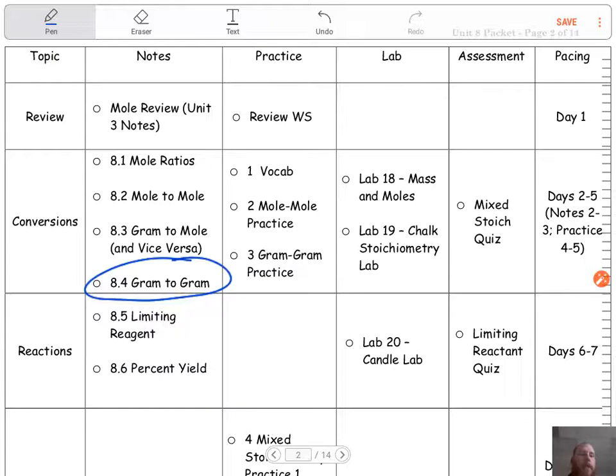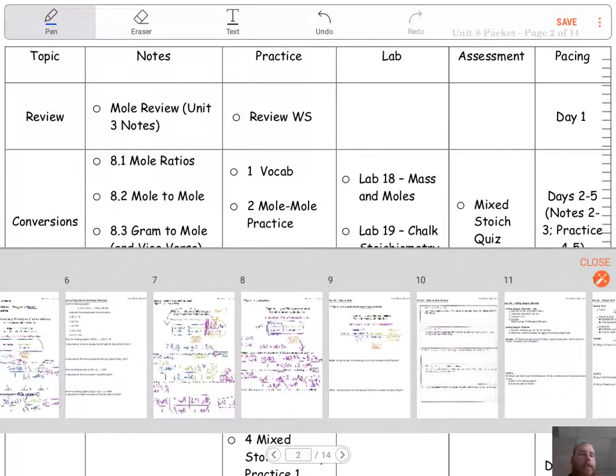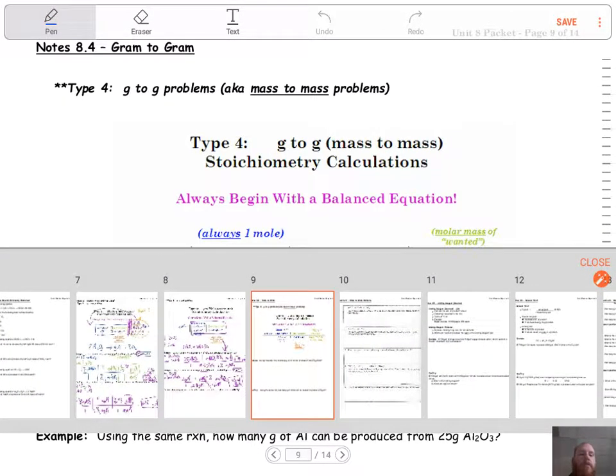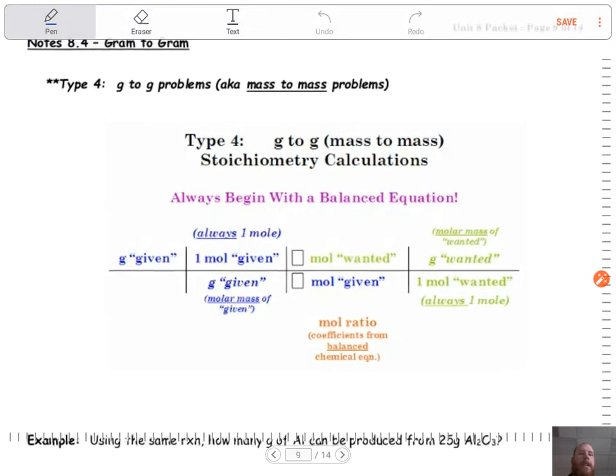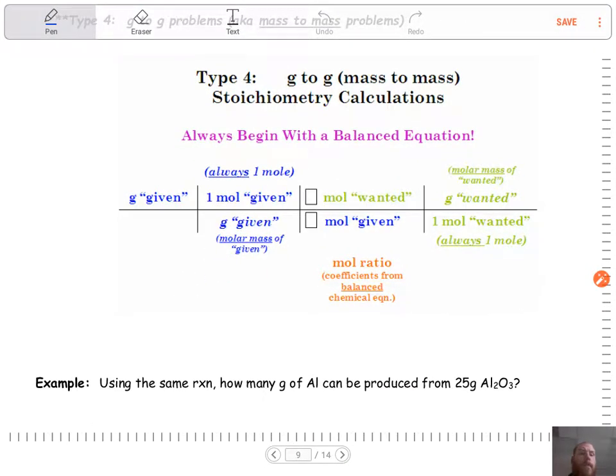So up until this point, we have done either just mole to mole conversions or we've done gram to mole or mole to gram. Now we're going to do gram to gram. So if you take a look here, this is page 9 in your notes. We're starting with grams of one substance and we're converting to grams of another substance. So it's putting it all together.